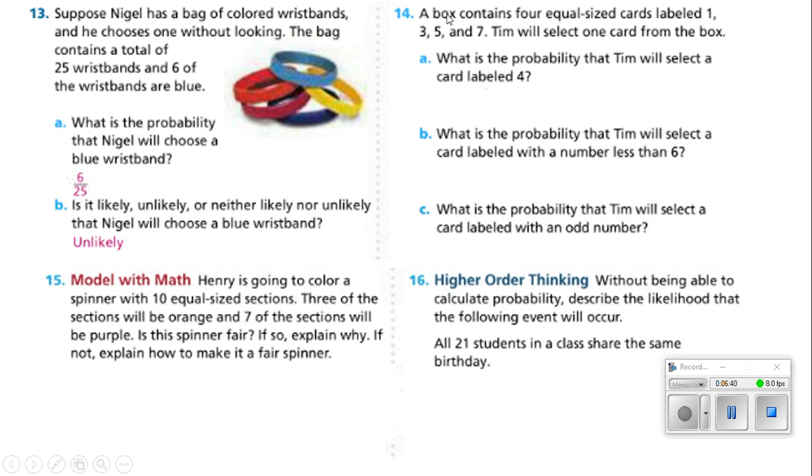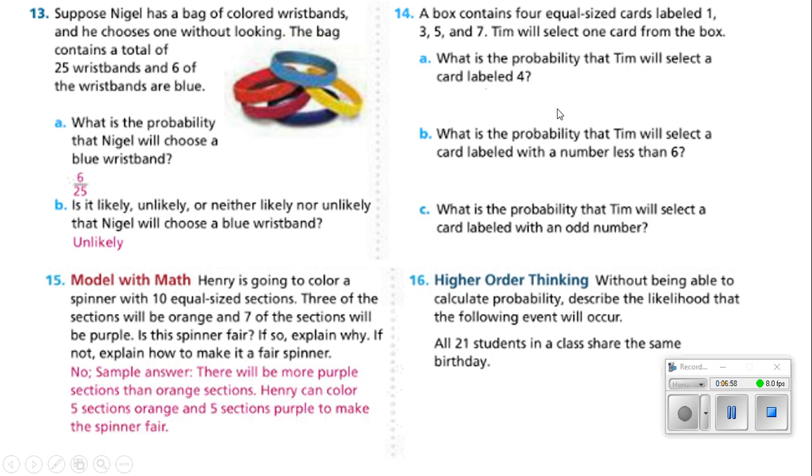Number 14 says, a box contains four equal size cards labeled 1, 3, 5, and 7. Suppose Tim selects one card from the box. What is the probability that Tim will select a card labeled 4? Well, none of these cards contain 4. So, looks like we accidentally put number 15 on first, so I'm going to go to it. Sorry about that.